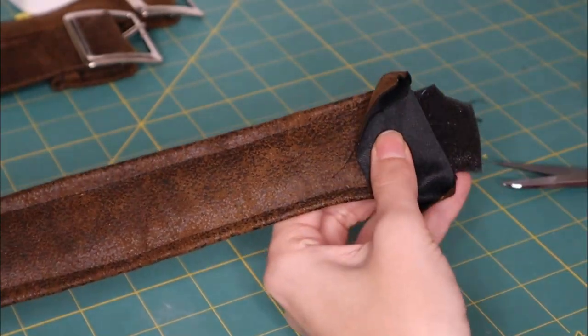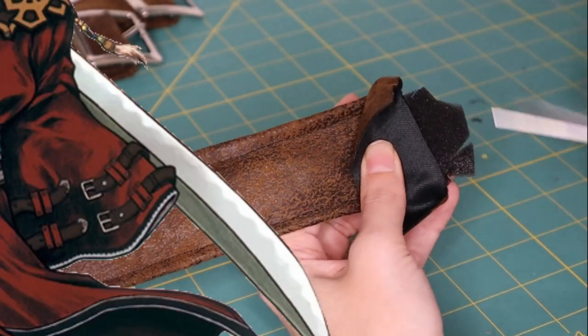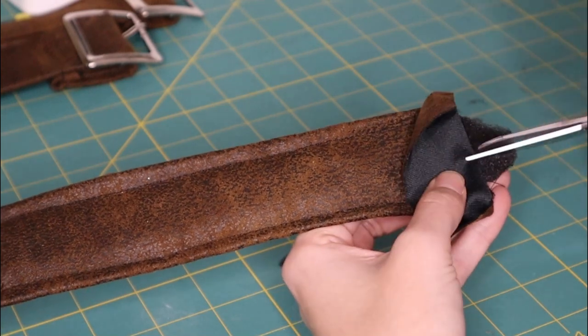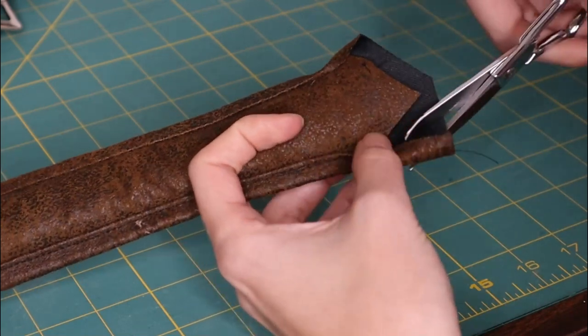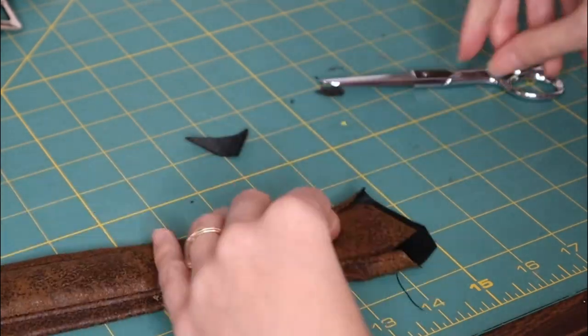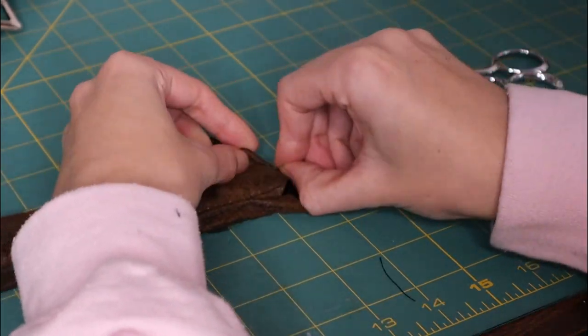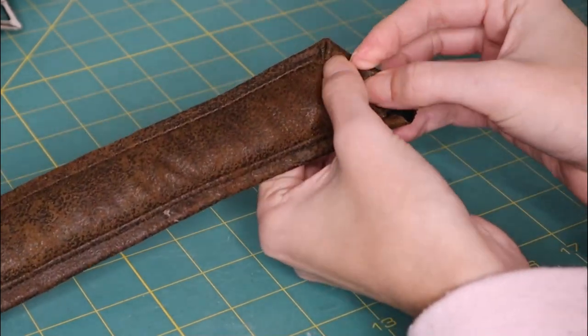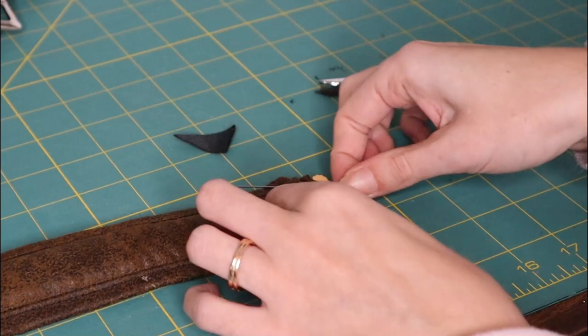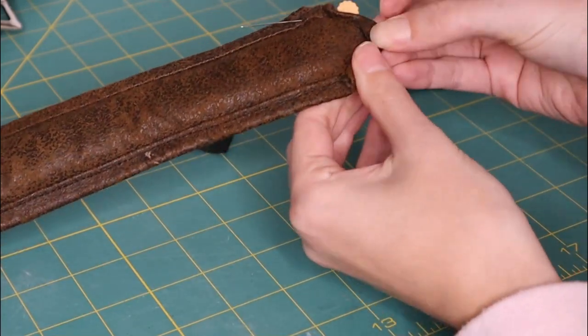Now for the cosplay I'm making, this is going to be in the shape of a V, and right now it's in the shape of a square. So I'm going to go ahead and cut a V shape into the end of my belt. And then I actually decided to just fold over the edges the same way that I did the sides of the belt. It was a bit tricky to get everything to line up, so it does take a little bit of practice.